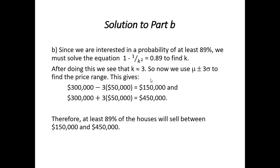Now we use the μ ± 3σ to find the range. We work this out and get 300,000 minus 3 times 50,000 gives us 150,000, and then with the plus we get 450,000. Our summary is now that at least 89% of the houses will sell between 150,000 and 450,000 in this neighborhood of interest.